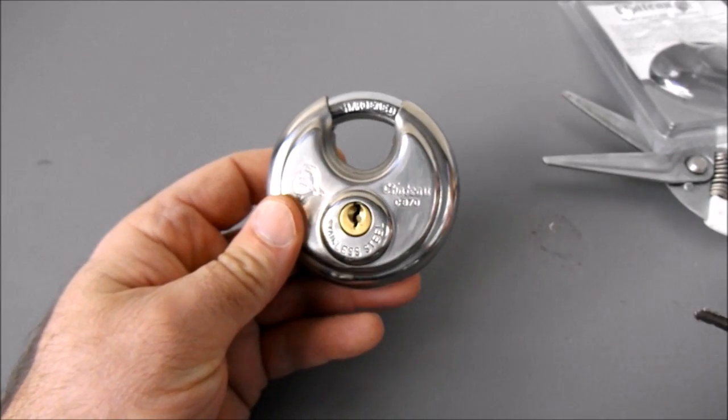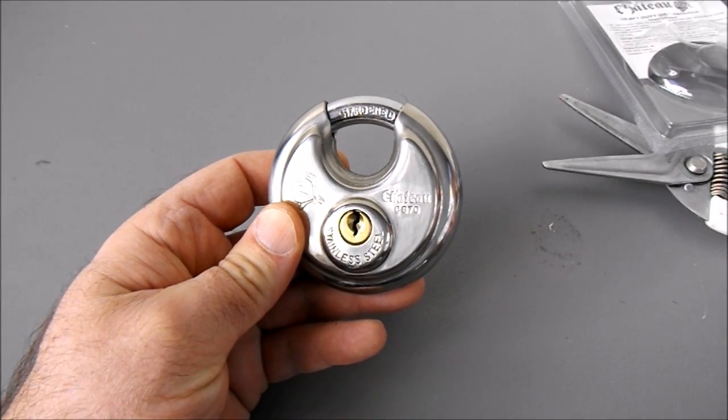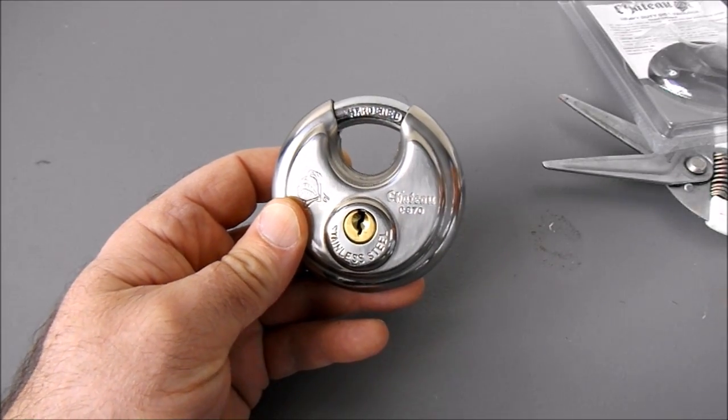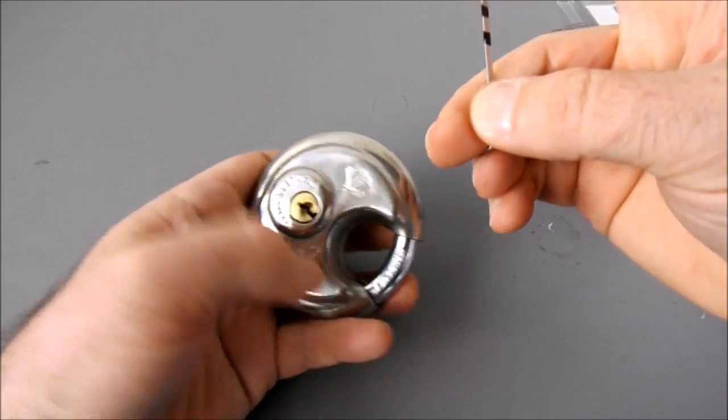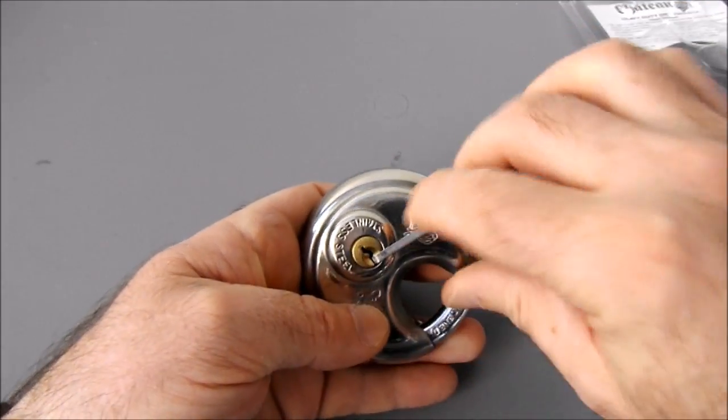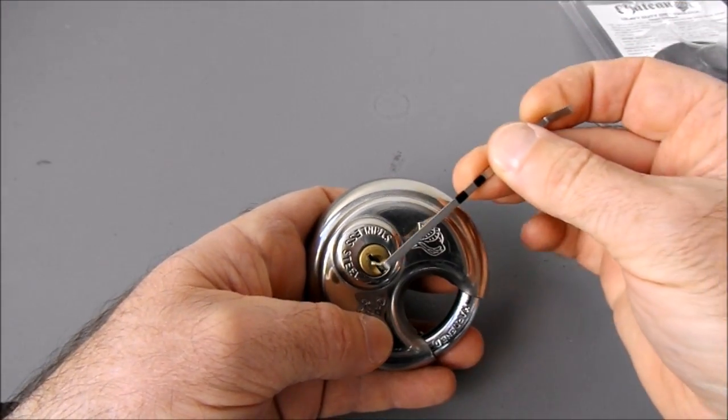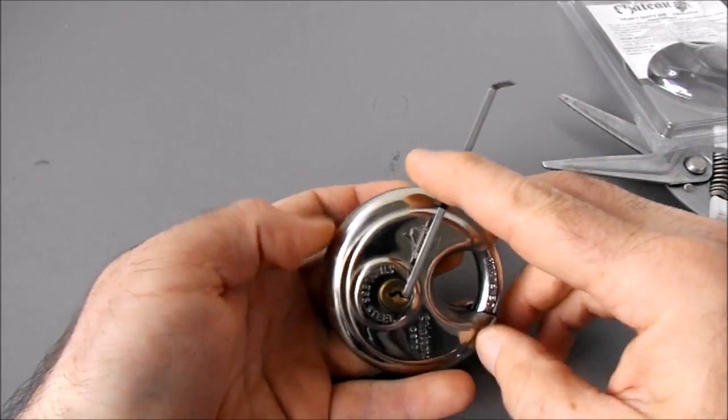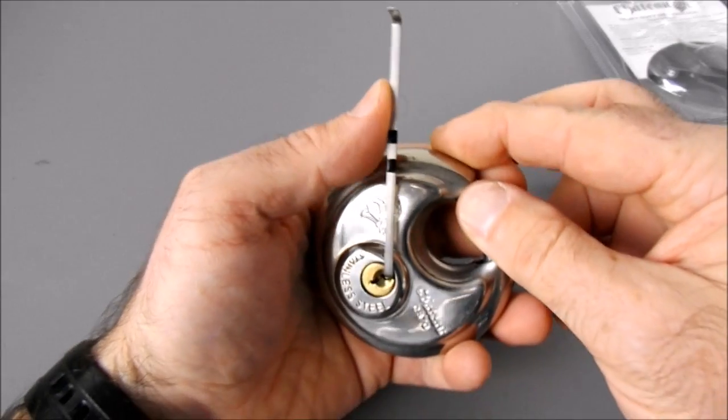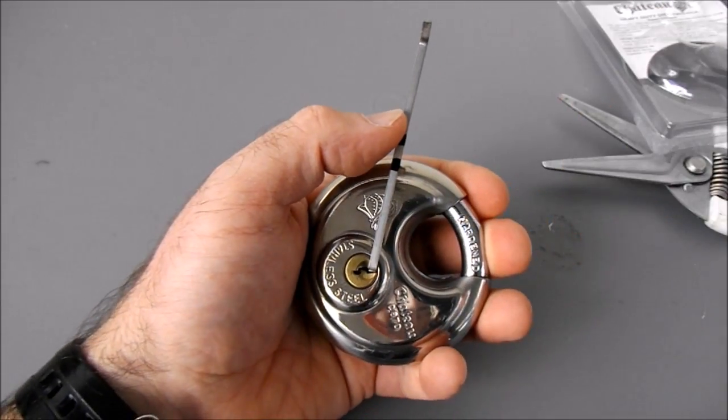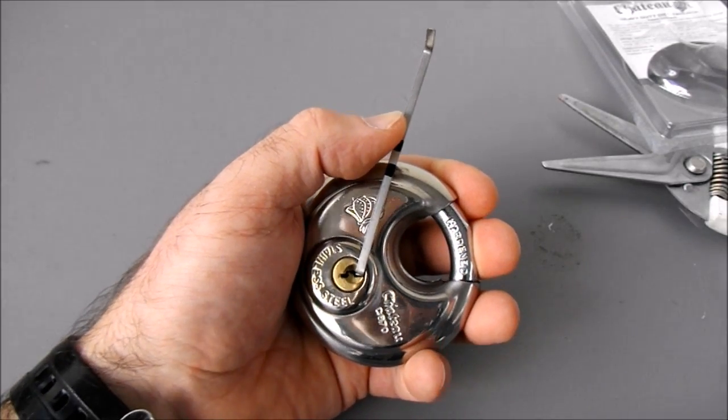I haven't picked this before - you saw that come straight out of the packet - so I really don't know what to expect here. I think what we're going to try and do is use bottom of the keyway tension. Let's just put the short end of that in. This is a Sparrows bottom of the keyway tension wrench, and it's quite a narrow keyway.